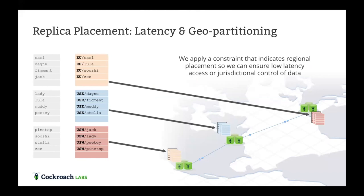We can also do geopartitioning. By overloading the key with a location value from the table — say a country or location column — ranges get tied to servers because each node is tagged with its location. So we can distribute data to survive failure, to handle utilization and workload, and also from a geopartitioning perspective. All of this can be changed on the fly. We can change the primary key, and once changed, the database automatically starts moving things around to make it correct.